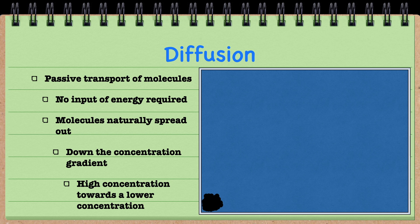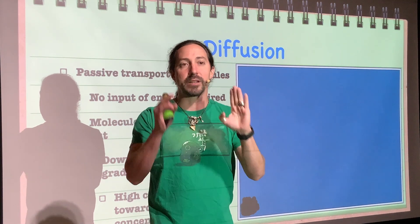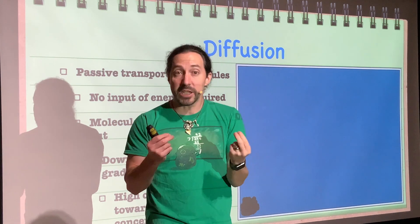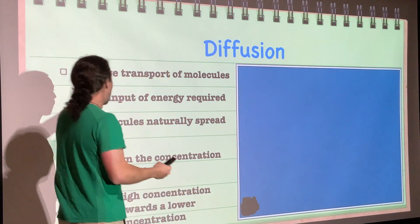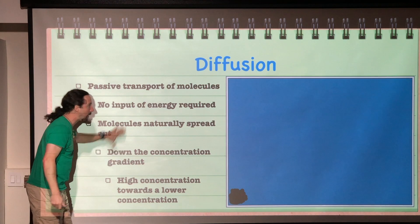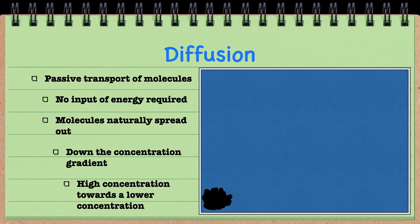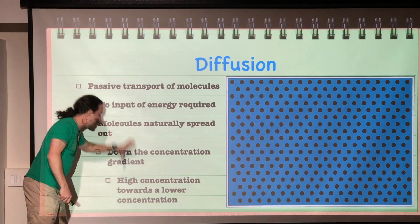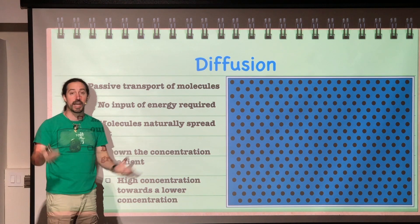Diffusion is the passive transport of molecules — it requires no energy input at all. It happens through the heat energy, the temperature energy, that is already available. Because molecules are in motion at any temperature above absolute zero, they naturally spread out and move down the concentration gradient — from high concentration to lower concentration — until they are approximately uniformly distributed.